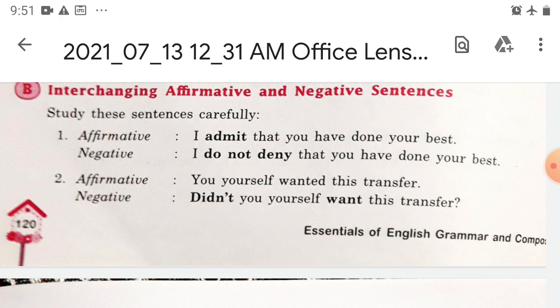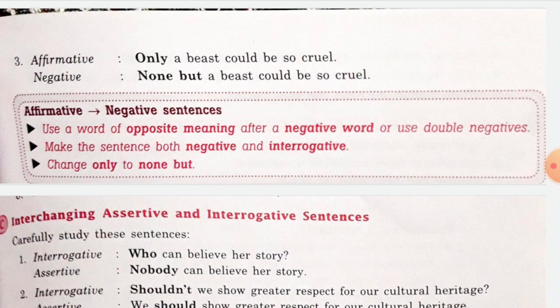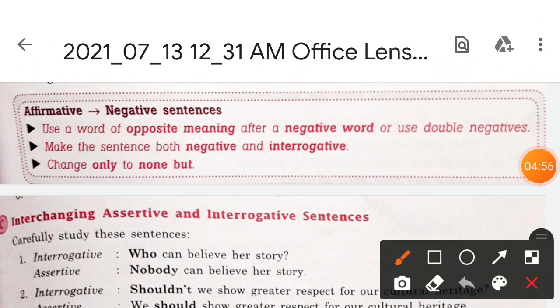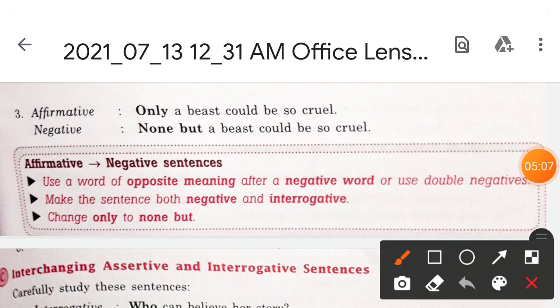Affirmative: 'You yourself wanted this transfer.' Negative: 'Did not you yourself want this transfer?' Another affirmative: 'Only a beast could be so cruel.' Negative: 'None but a beast could be so cruel.' When changing affirmative into negative, use a word of opposite meaning after the negative word, or use double negatives, or make the sentence both negative and interrogative. Here 'only' is changed into 'none but.'